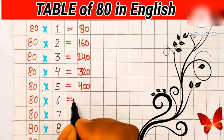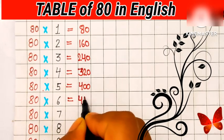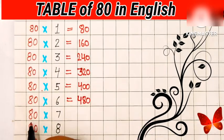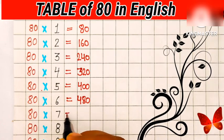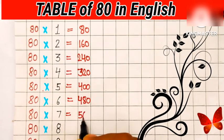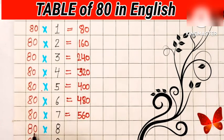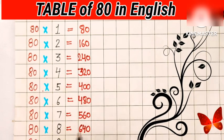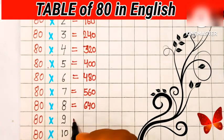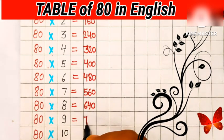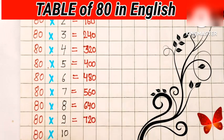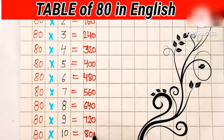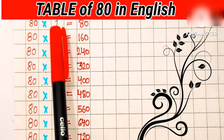86's are 480. 87's are 560. 88's are 640. 89's are 720. 80's are 800. Table को repeat करेंगे.